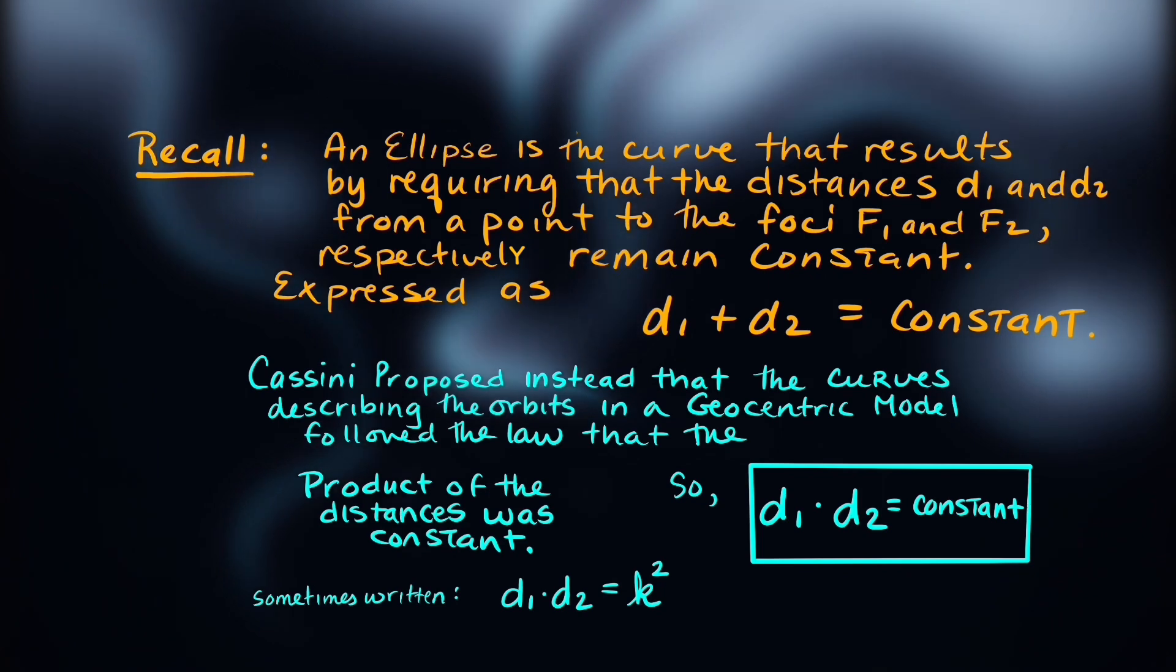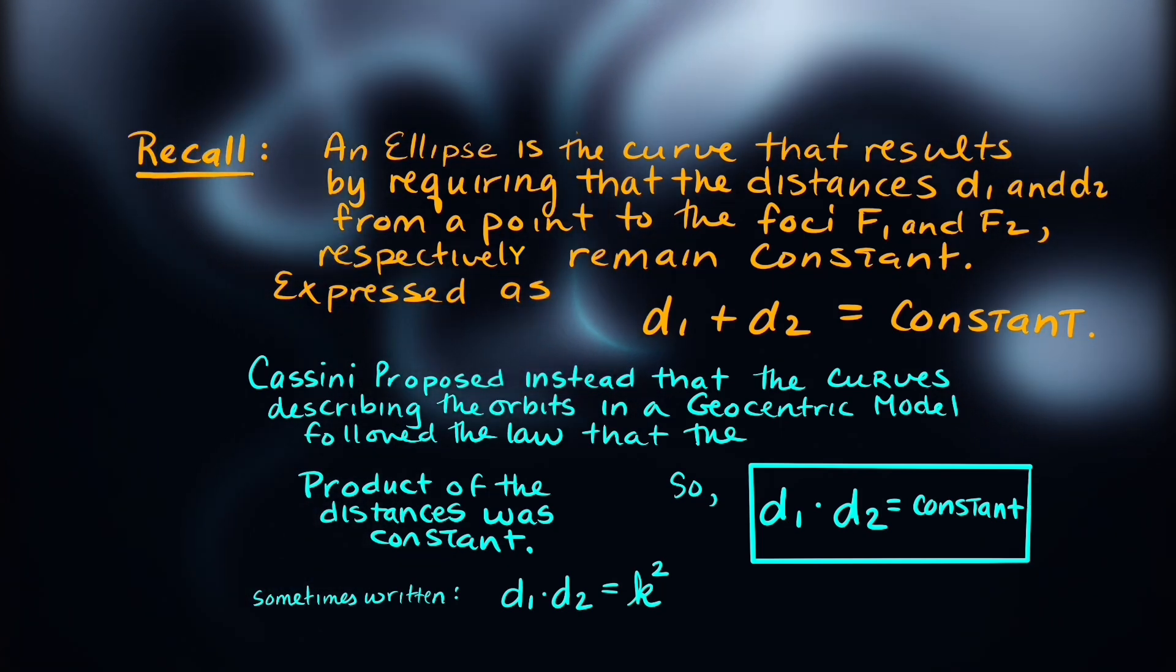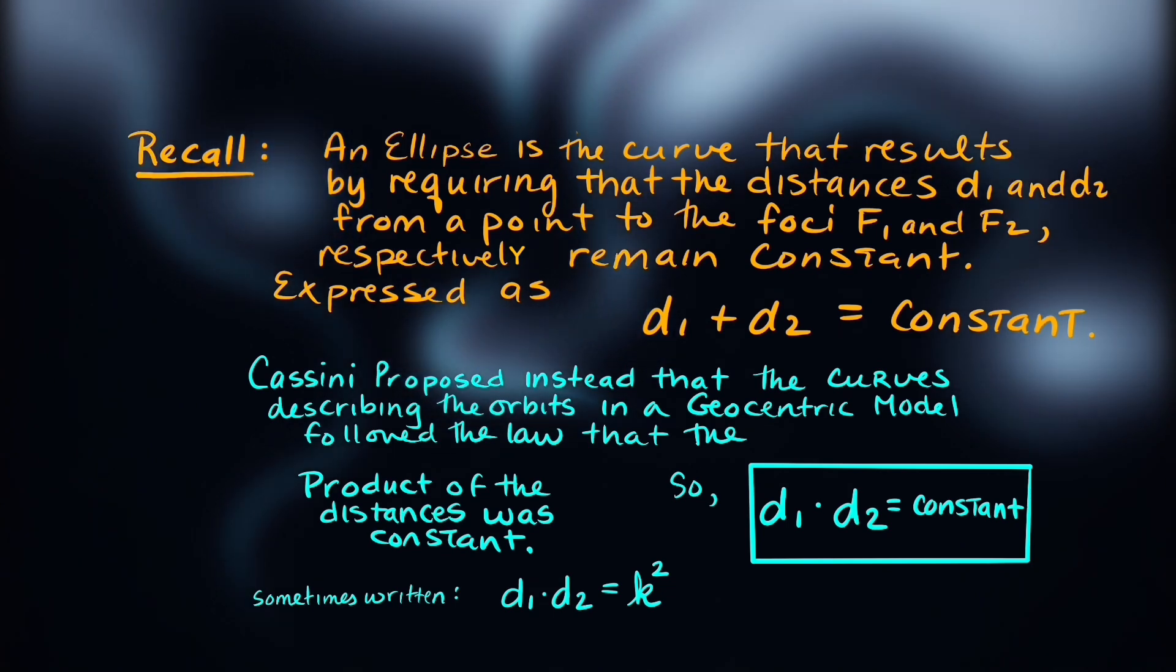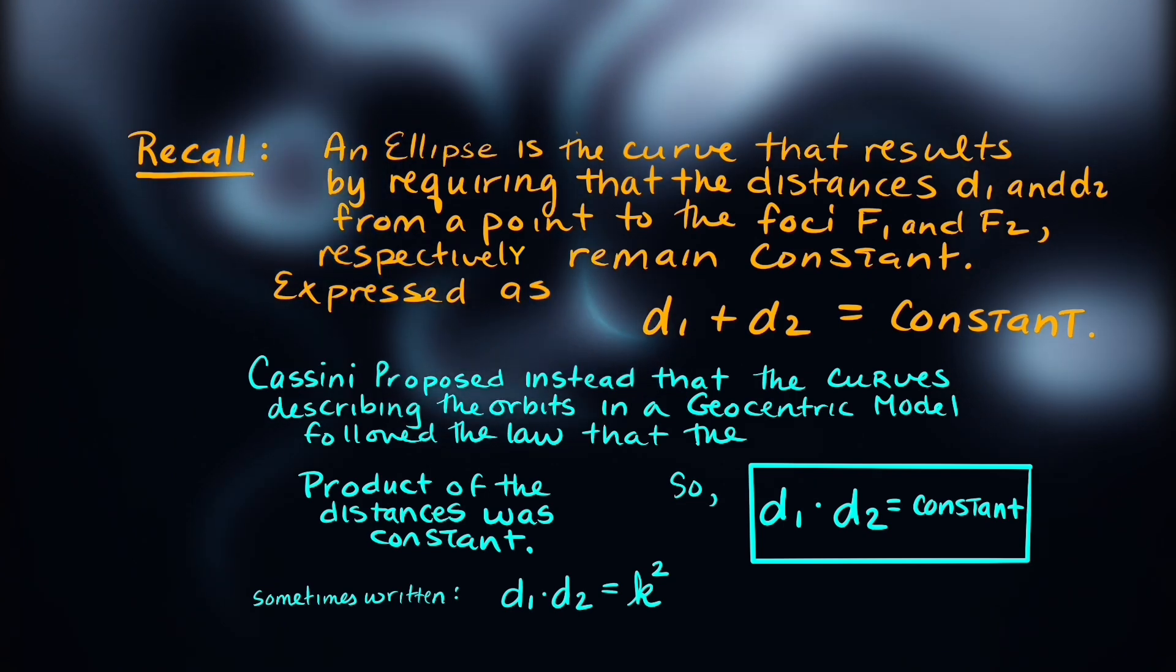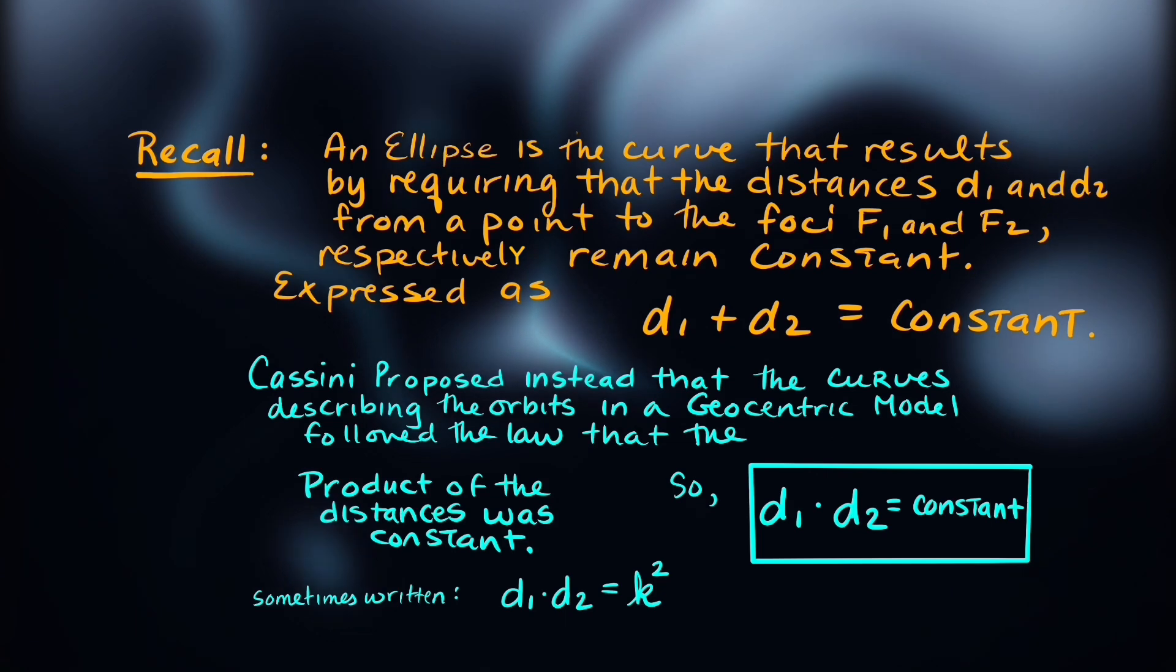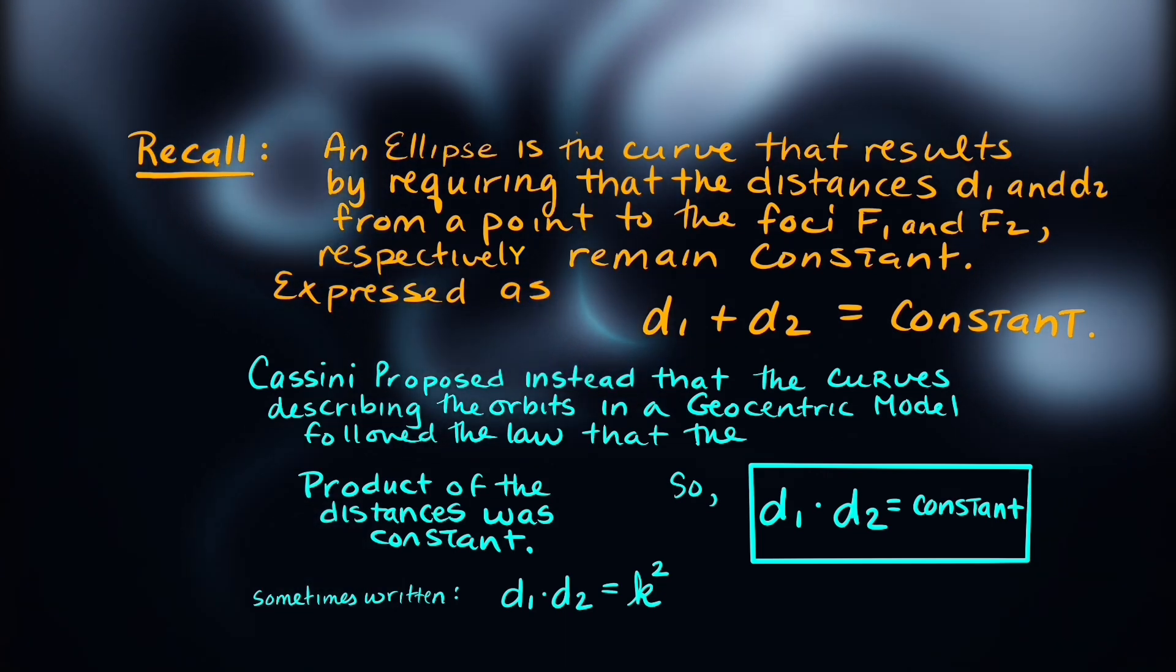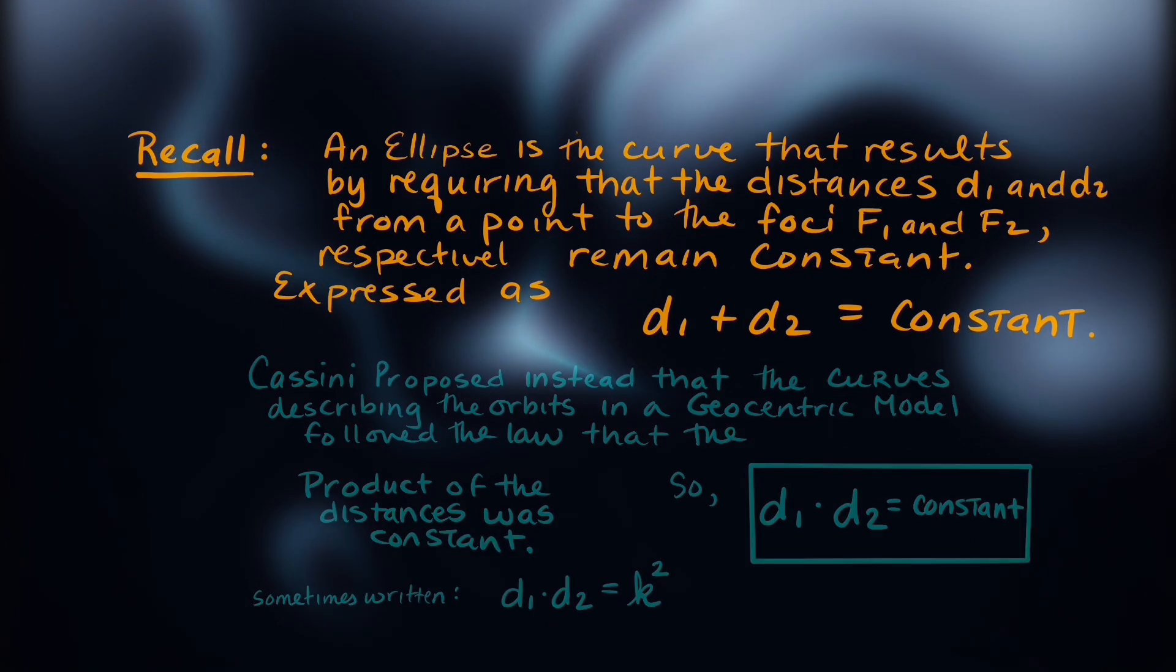But Cassini proposed instead that the curves describing orbits in a geocentric model followed the law that the product of those distances was what's constant. d_1 times d_2 equals k squared is often how this is expressed. Now although these curves didn't accurately describe the orbits of the planets, they still had value.